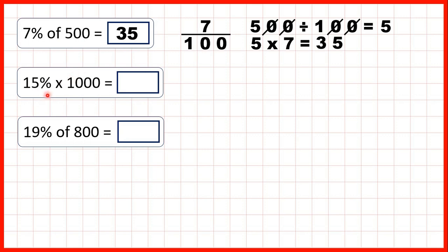Now we have 15% times 1000, but remember, times and of mean the same thing, so we follow exactly the same method. 15% is 15 over 100, because percent means we have a denominator of 100.